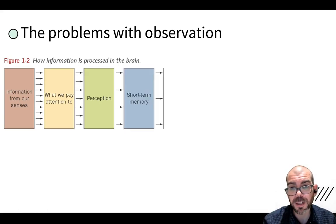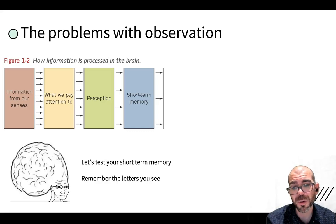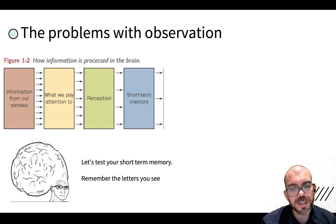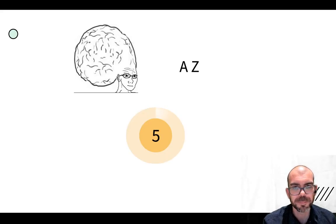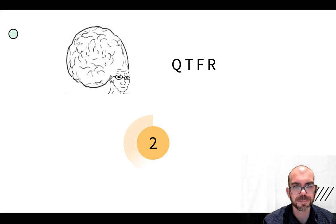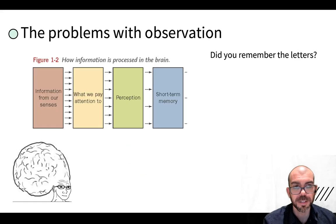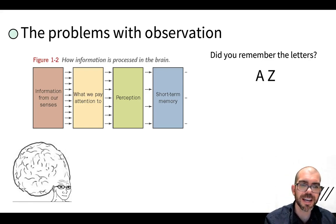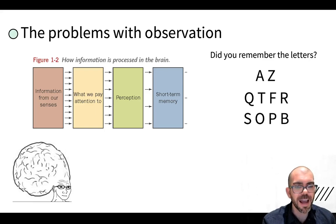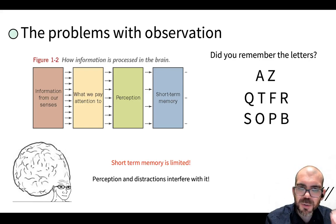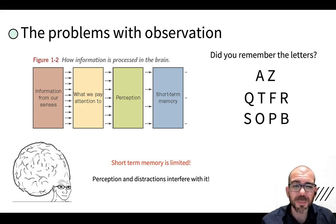So let's say you have that information from your senses, you're selectively paying attention to a little bit, you're perceiving it based on your previous knowledge — then hopefully it goes into your short-term memory. Well, here's the thing: short-term memory isn't as accurate as you think it is. When you're cramming for that test the night before, most of it isn't sticking. For example, I'm going to show you a series of letters — see if you can remember them. The first two letters were A-Z, followed by Q, T, F, R, S, O, P, B. Odds are you didn't remember all those letters, and this is one of the easiest memory tests I could find.